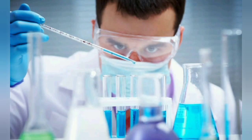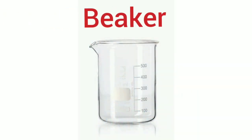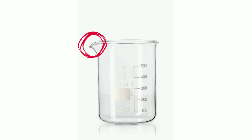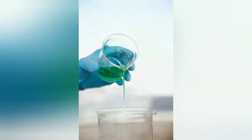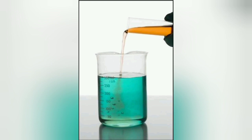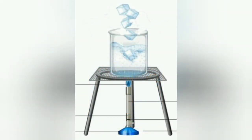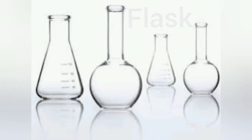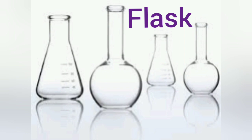This is a beaker. A beaker is an open glass container which is cylindrical in shape with a flat base. It has a pouring tip at the top from which liquids can be poured easily. The beaker is used for mixing, storing, and heating substances.